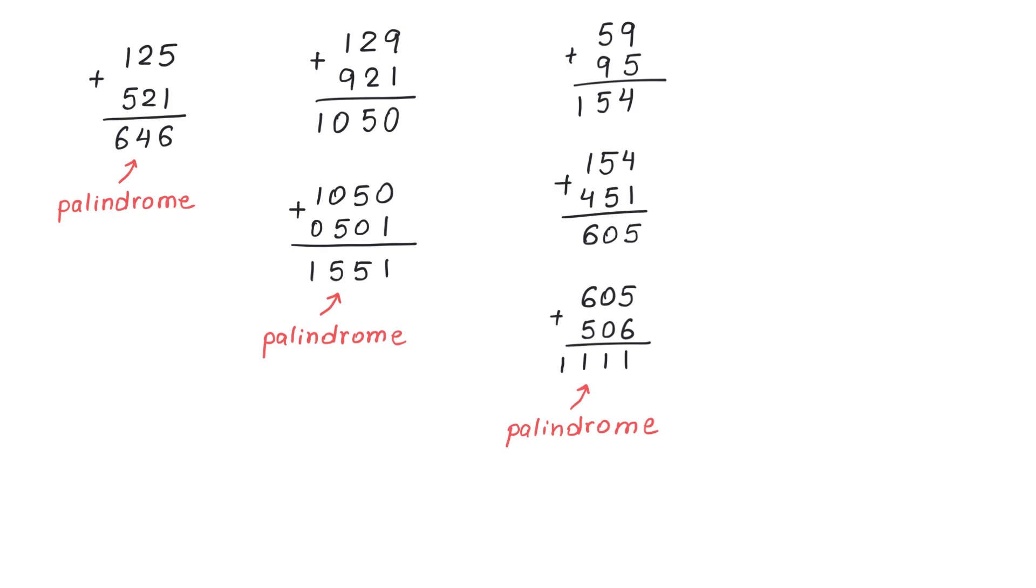One such number is 196. A big effort was made over multiple years to find a palindrome by completing so many steps and producing numbers with 1 billion digits, yet no palindrome was found.